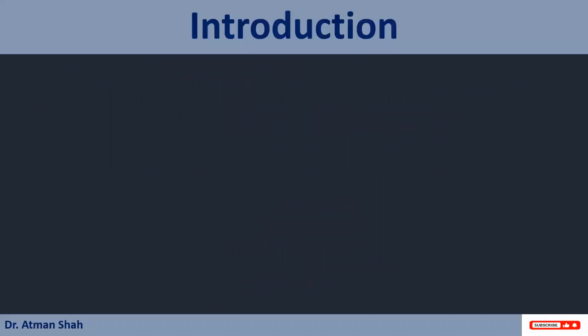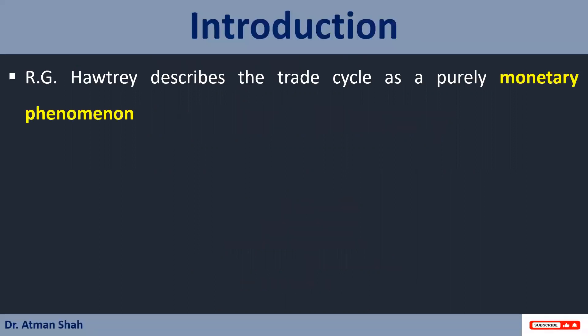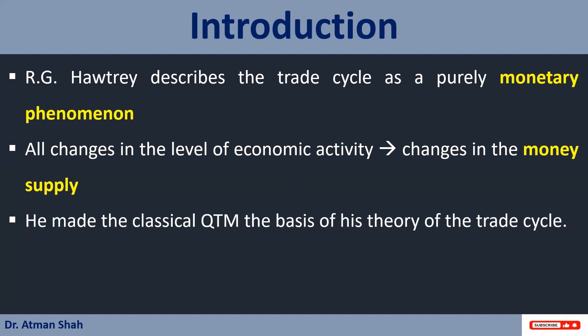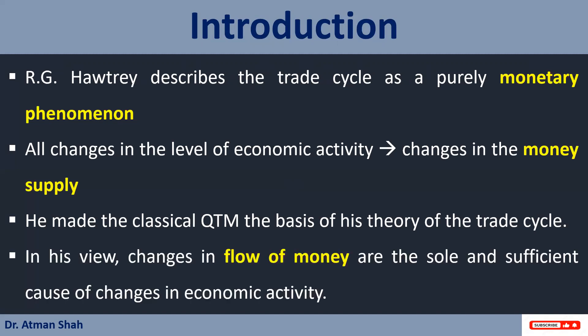Let's begin with the introduction. Hawtrey describes the trade cycle as a purely monetary phenomenon. So all changes in the level of economic activity are caused by changes in the money supply. He made the classical quantitative theory of money the basis of his theory of the trade cycle. In his view, changes in the flow of money are the sole and sufficient cause of changes in economic activity. So according to him, money supply plays an important role in understanding the trade cycle or business cycle.